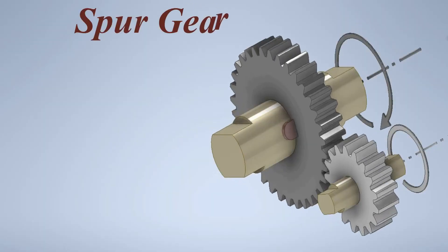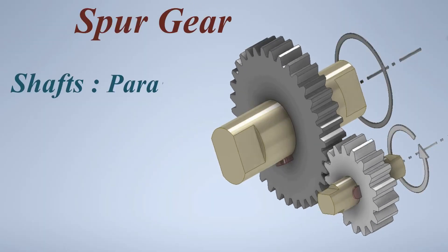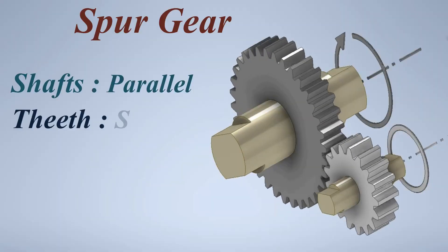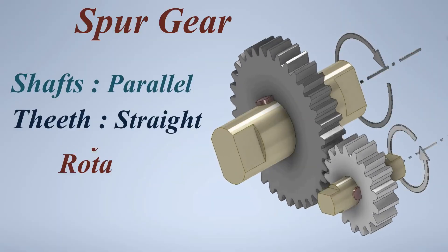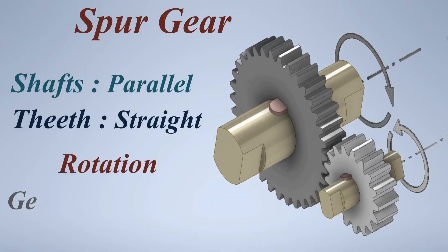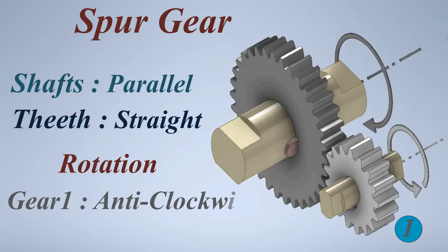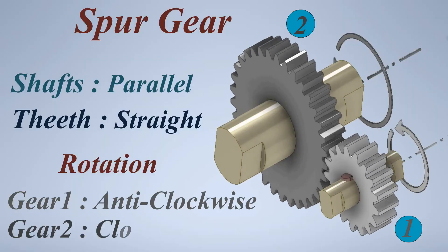Spur gear. Shafts: parallel. Teeth: straight. Rotation — Gear 1: anticlockwise, Gear 2: clockwise.